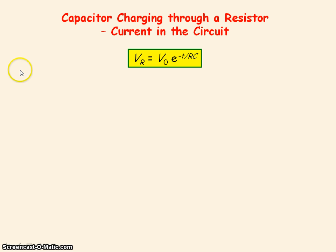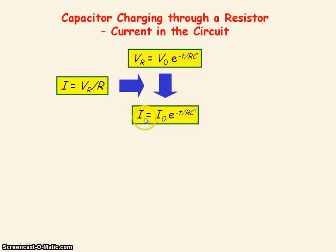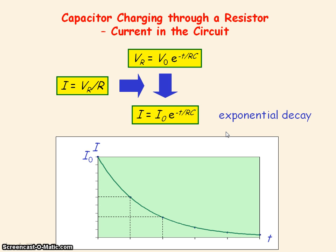The current in the circuit is equal to the voltage across the resistor divided by its resistance. So if we take the expression for the voltage across the resistor and divide both sides by R, we get this current expression. The current in the circuit follows an exponential decay.